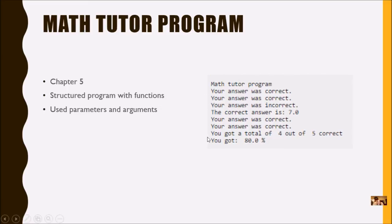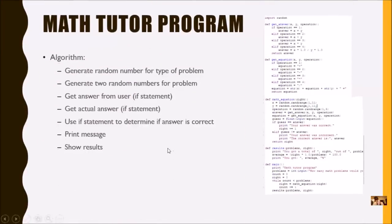The output might have looked something like this. For structured programming we followed an algorithm. We wanted to generate a random number for the type of problem — we had three types, so a random number between one and three. We generated two random numbers for the problem, mostly one to ten. We got the answer from the user using an if statement, because we had to figure out what type of problem it was before we got the answer, then get the actual answer, then use another if statement to determine if the answer was correct, print a message — correct or incorrect — and show results.